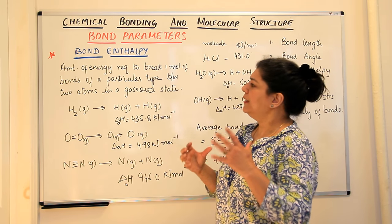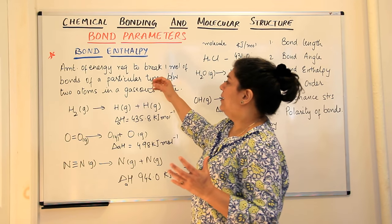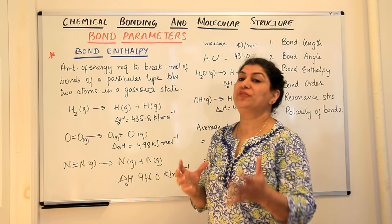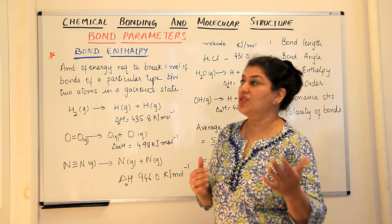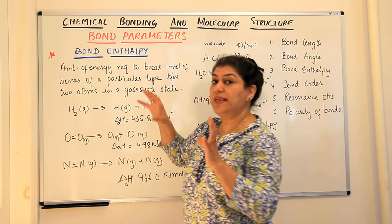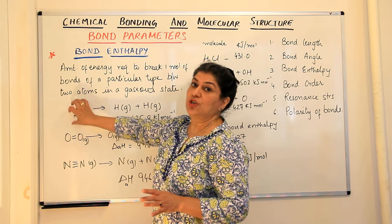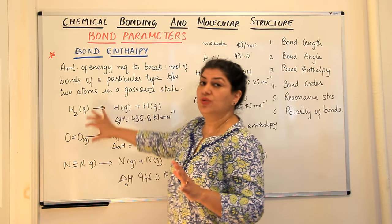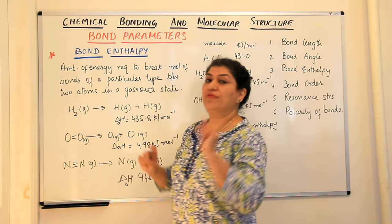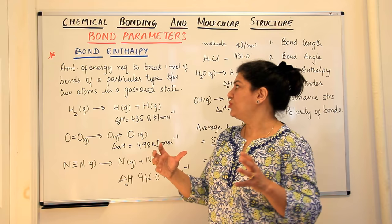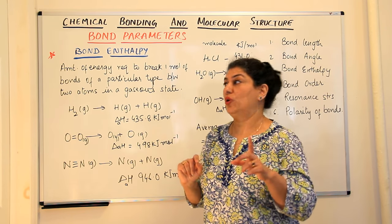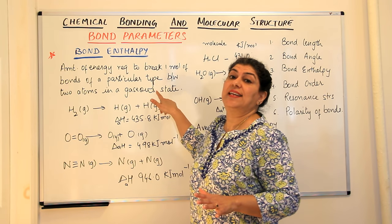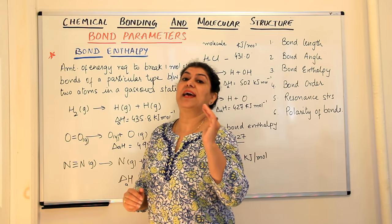Why do we say a particular type? Because bonds can be of different types — they can be single bonds, double bonds, or triple bonds. We are taking one mole, that is the reactant should be one mole, and you are breaking one mole of those bonds, whatever be the type of bond you are dealing with. So the amount of energy associated with breaking one mole of bonds — the condition is that the bonds between atoms should be in the gaseous state.